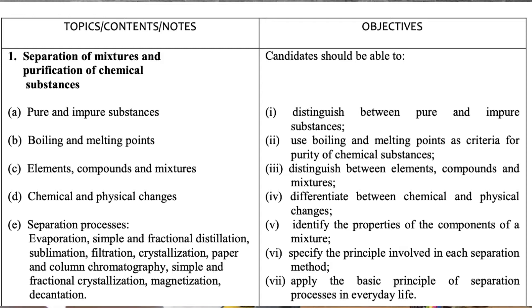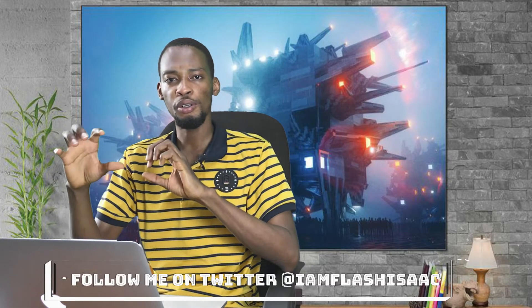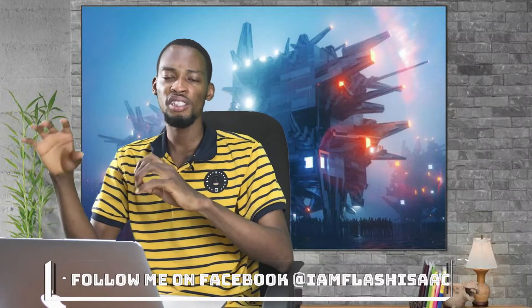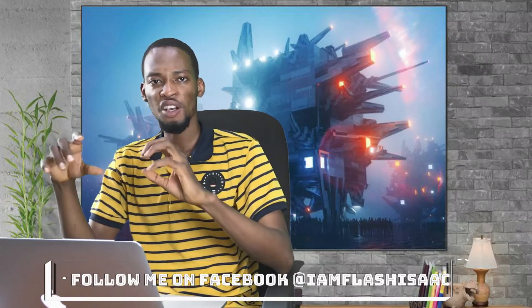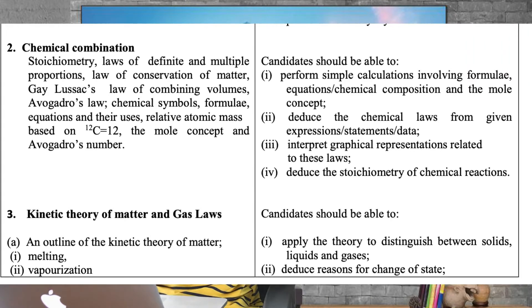Starting with separation of mixtures and purification of chemical substances. Substances can either be pure or impure — this comes from the study of matter. Pure substances are basically elements, while impure substances could be compounds or mixtures. Mixtures contain elements or substances that are physically combined and can be easily separated. You should know the separation of mixtures, purification, the first 20 elements, how compounds are formed, and chemical combinations.